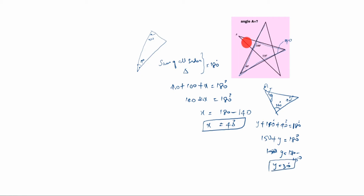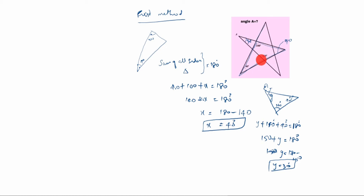y is equal to 30 degrees. So y value is 30 here — this value is 30. That is the first method. In the second method, in this drawing you see here 110. Now this full line is 180 degrees — a straight line is 180 degrees.